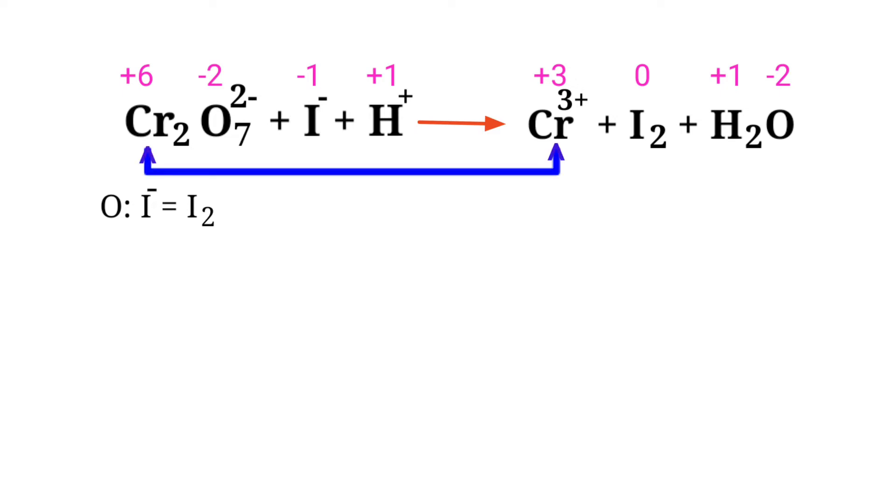Chromium has a charge of plus 6 and it is changing into plus 3, so chromium is being reduced.